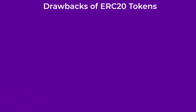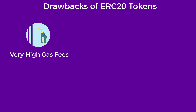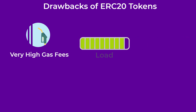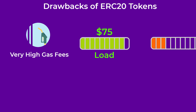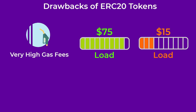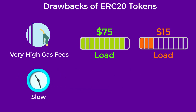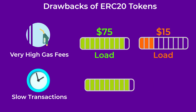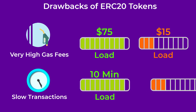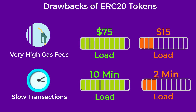Although creating an ERC-20 token is very easy, ERC-20 tokens are not perfect. One of the most obvious drawbacks is the very high gas fees paid on the Ethereum blockchain. These fees increase as network load increases and can reach as high as $70 or $80 to swap some tokens. When the load on the network is high, transactions can take a while to get confirmed — sometimes up to 10 minutes.